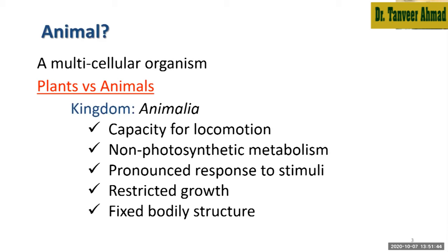The first characteristic is capacity for locomotion. Movement is also present in the case of plants, but that is not locomotion. Locomotion means they can move from one place to another — they can change their position. Plants cannot do this. Though they show some movement through touch or sunlight, as in the case of sunflower, they are not able to change their position.